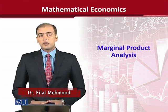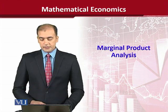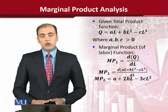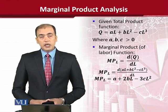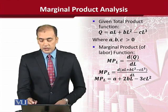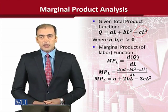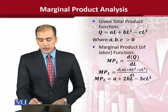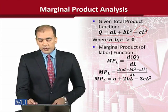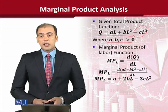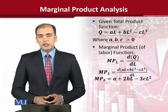Our focus will be to calculate the marginal value of the product. Assuming a total production function which is cubic in nature, because the highest power of the independent variable is 3. When we have this production function given, we have some parameters which are not numerical values, however we have assumed that they are positive values.